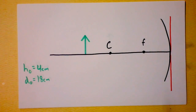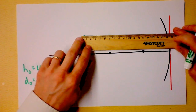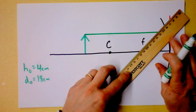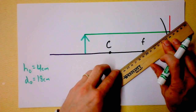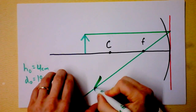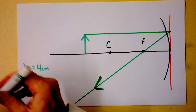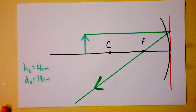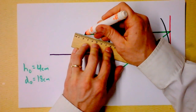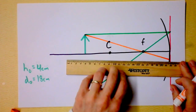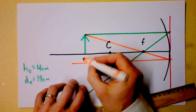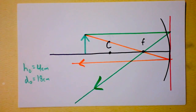I'll start with the P ray each time. The P ray comes in parallel and bounces out through the focus — the focus is here, so it will go like this. I'm going to put arrows on the outgoing rays. The next ray is the F ray. The F ray comes in through the focus, hits the line of action of the mirror, and comes out parallel.